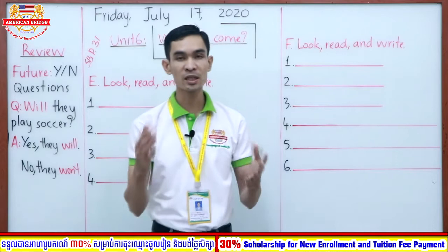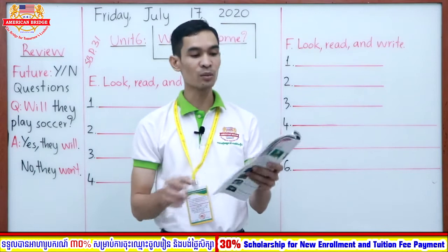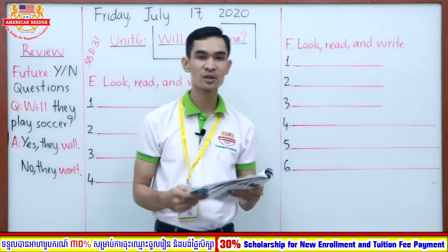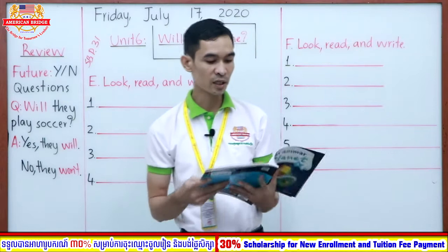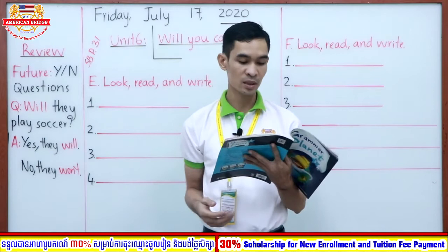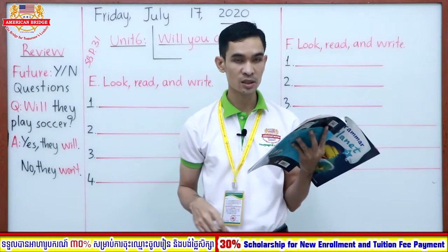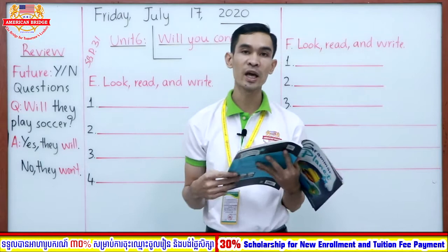So now we finish our review part. Let's continue our lesson. You can open the book all together on page 31. Are you at the same page? Good. Today we focus on two activities: Activity E and Activity F. Now you can look at letter E. It says: read and write. Here there are four pictures and four questions.